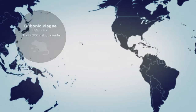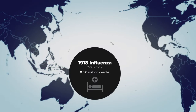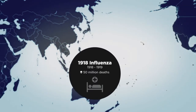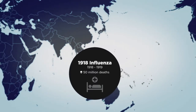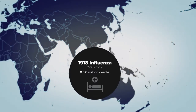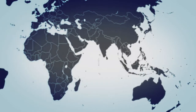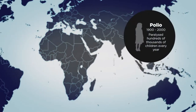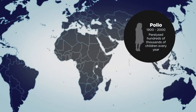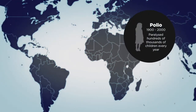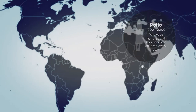In 1918, influenza infected one-third of the world's population, killing nearly 50 million people. In the 20th century, polio paralyzed hundreds of thousands of children every year.